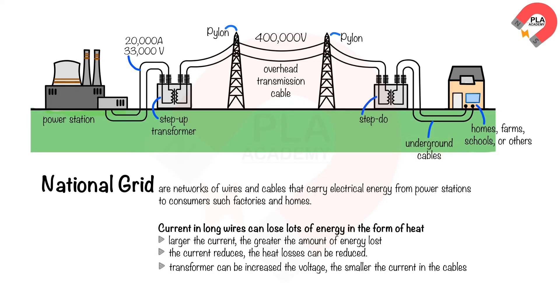Close to where the electrical energy is needed, the electricity is sent through a step-down transformer that decreases the voltage to approximately 230 volts, while at the same time increasing the current.